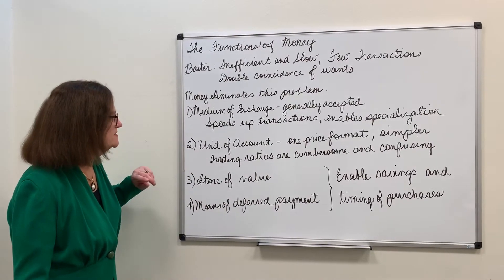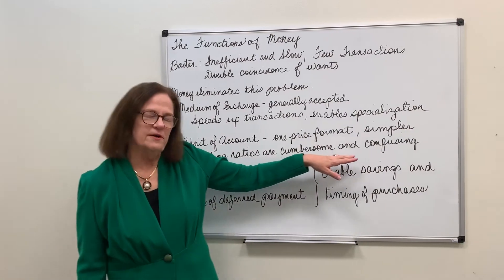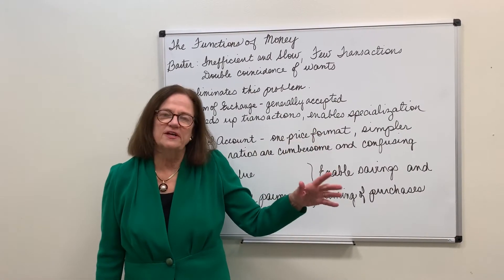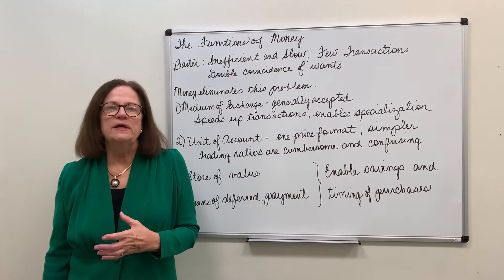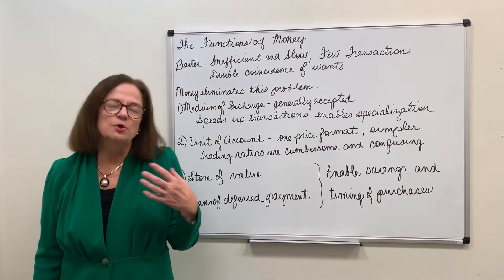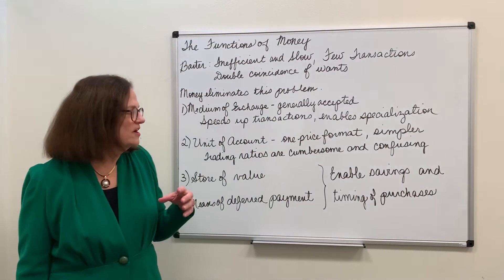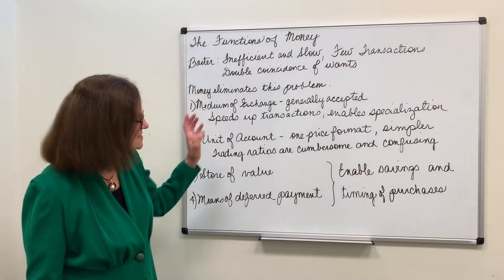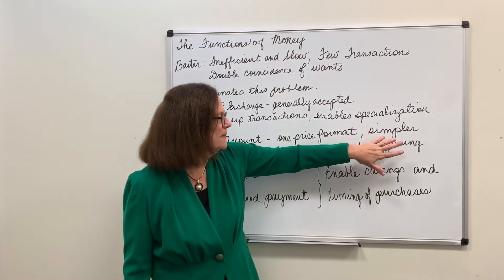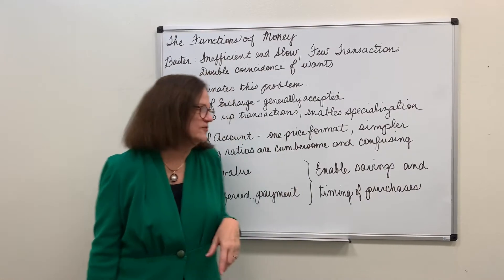Money also serves as a unit of account. When you have a lot of goods and you're trying to barter one for the other, those trading ratios are cumbersome, confusing, and very hard to keep track of. How many green beans does it take to make a pair of blue jeans? How many blue jeans does it take to make a new trash can? Money solves that problem — everything is priced in terms of money, making pricing much simpler and making it easy to compare the relative value of goods and services.